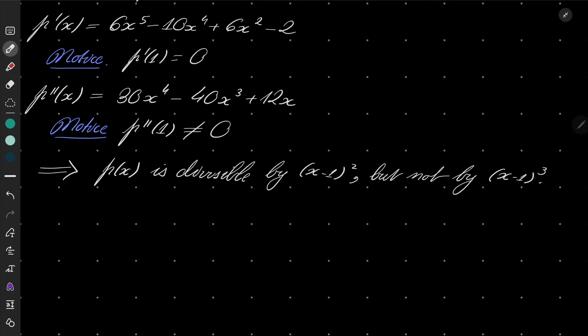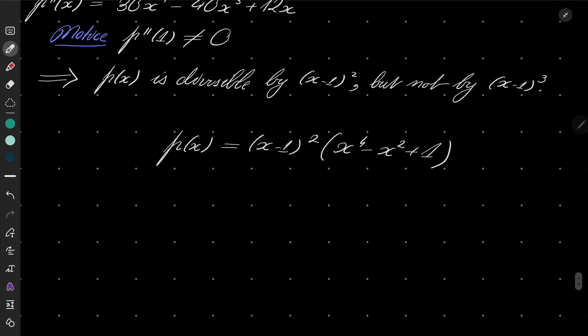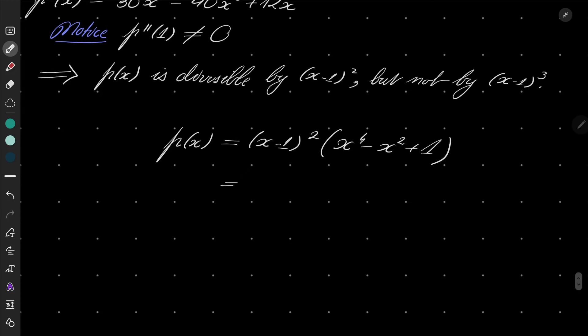And now we should do the division, whichever way you like. I will give just the result. p of x is x minus 1 squared, and the quotient after upon division will be x to the power of 4 minus x squared plus 1. And now I'd like to write the second parenthesis in slightly different form: x to the power of 4 minus 2x squared plus 1 plus x squared.